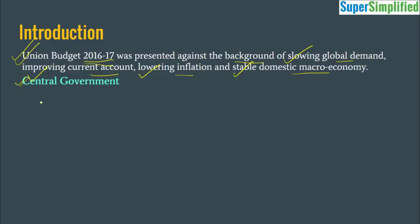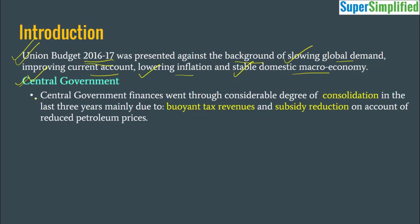When we talk about the central government, some important points emerge. Central government finances went through a considerable degree of consolidation — meaning the government is trying to bridge the gap between its revenue and expenditure — in the last three years, mainly due to buoyant tax revenues and subsidy reduction. This happened on account of reduced petroleum prices, so central government has gone for fiscal consolidation.